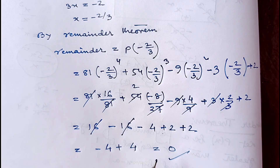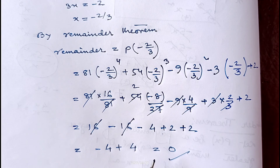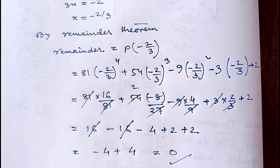I hope this sum is clear. That's the end of 2C, because the remaining sums of 2C are not in the syllabus. In the next video I am going to explain the factor theorem and sums of 2D. Till then, bye bye, take care and wait for the next part.